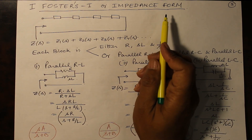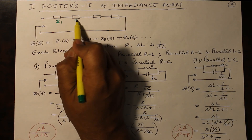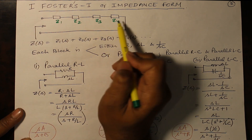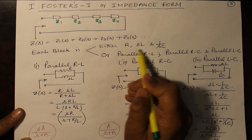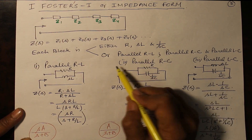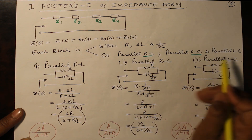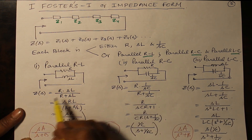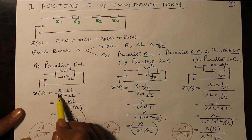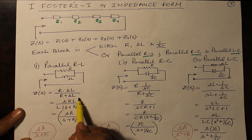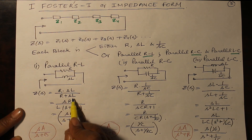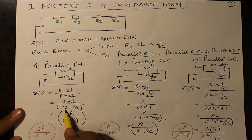Coming to Foster's Form 1, the impedance form, this is represented as a series combination where each of Z1, Z2, Z3, Z4 can either be R, an inductor SL, or a capacitor 1/SC, or a parallel combination of RL, RC, or LC. Note that RLC networks are not in your course. For a parallel RL network, Z(s) equals R·SL divided by R plus SL. Taking L common gives the form SA/(S + B), where L cancels out.